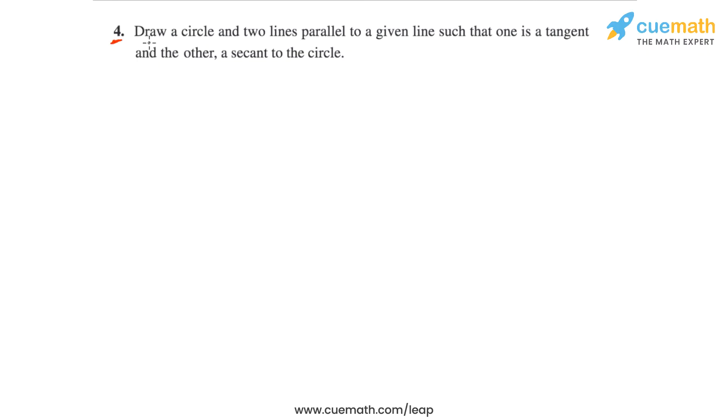Question 4 of this exercise says draw a circle and two lines parallel to a given line such that one is a tangent and the other a secant to the circle.